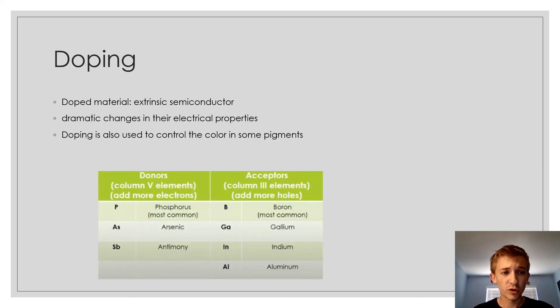This is a little bit about doping. When you dope a material, it's called an extrinsic semiconductor. There's dramatic changes in electrical properties just by a few elements, just by a few molecules. Doping is also used to control the color in some pigments. Down below is the commonly doped molecules in silicon.